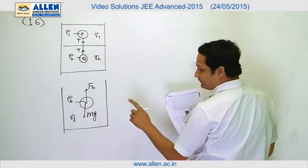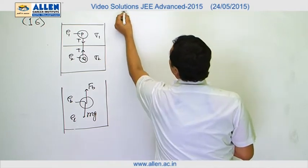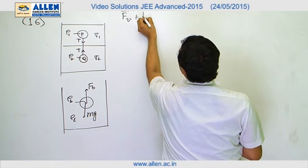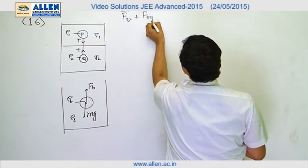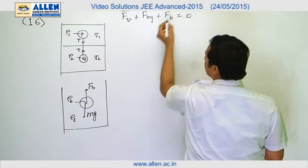Buoyant force FB upward and the other one will be viscous force. So we can say that the sum of the three forces will be zero if velocity is constant, terminal velocity. So we have viscous force, mg force, and buoyant force that equals zero.